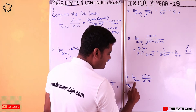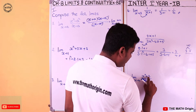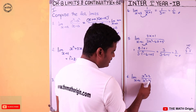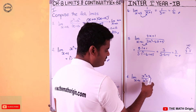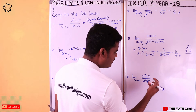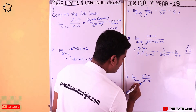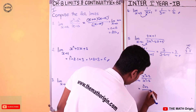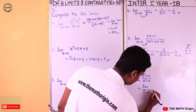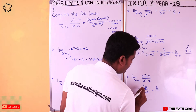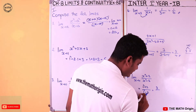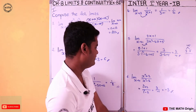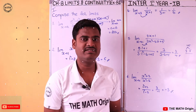Sixth question: limit x tends to 1 of (x² + 2) by (x² - 2). We substitute x = 1 directly: (1² + 2) by (1² - 2) = 3 by (-1) = minus 3. With this, we completed the sixth question.